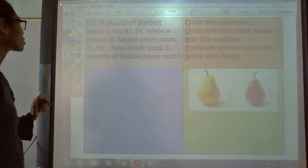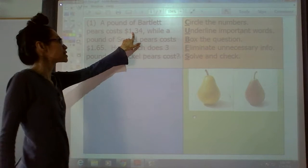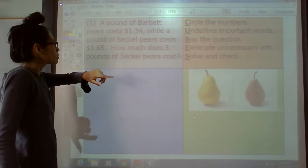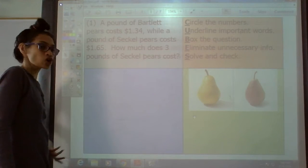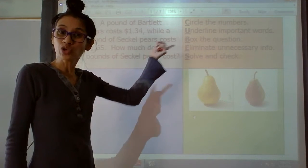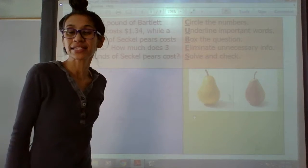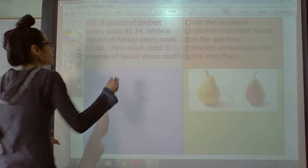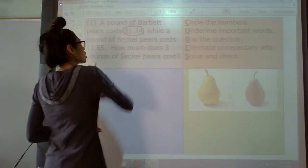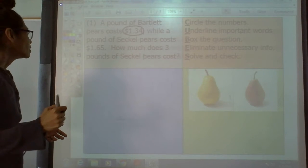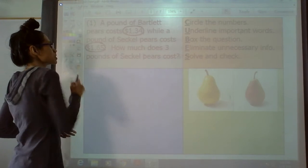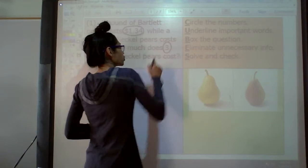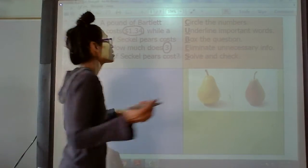It says a pound of Bartlett pears costs $1.34, while a pound of Seckle pears costs $1.65. How much does three pounds of Seckle pears cost? First thing we need to do, we can use our cubes clues, is the C step. We need to circle the numbers. Circle the numbers, help me find some numbers. Right there, $1.34. What else do you see? Right there, $1.65. What else do you see? There's a number three. Do you see any other numbers? Nope. We're done with that step. Check that step off.